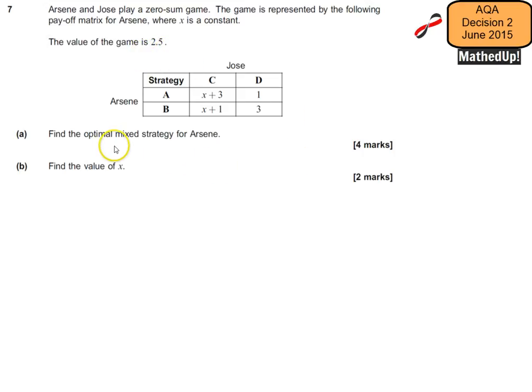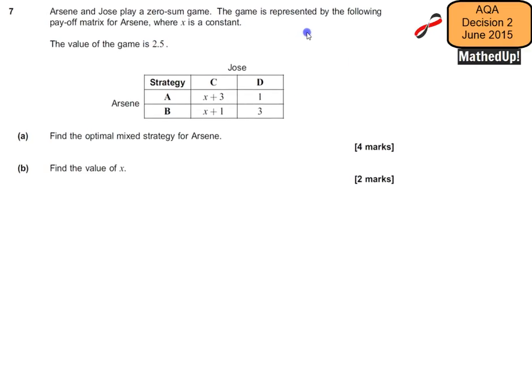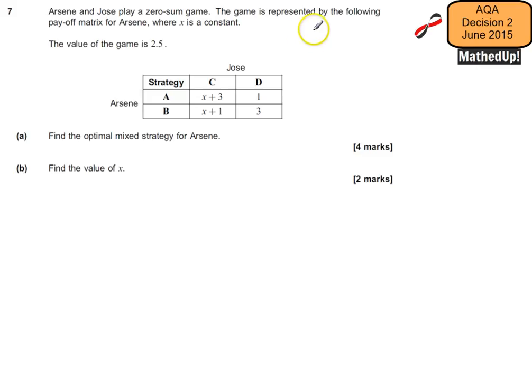So this is our game here. We want to find the optimal mixed strategy for Arson, and we also want to find the value of x. We know the value of the game is 2.5, so I'm going to use V to stand for the value of the game, and I'm going to say that V is equal to 2.5.